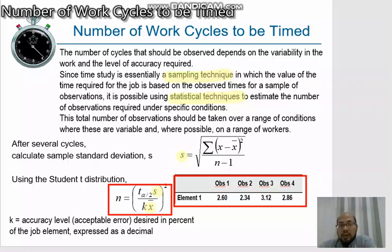The other parameter is K. K is defined as accuracy level or acceptable error desired in percent of the job element expressed as a decimal. For example, if I decide the acceptable error for this element is 10%, it will be expressed as 0.1. If I decide the acceptable error is 5%, it will be expressed as 0.05.